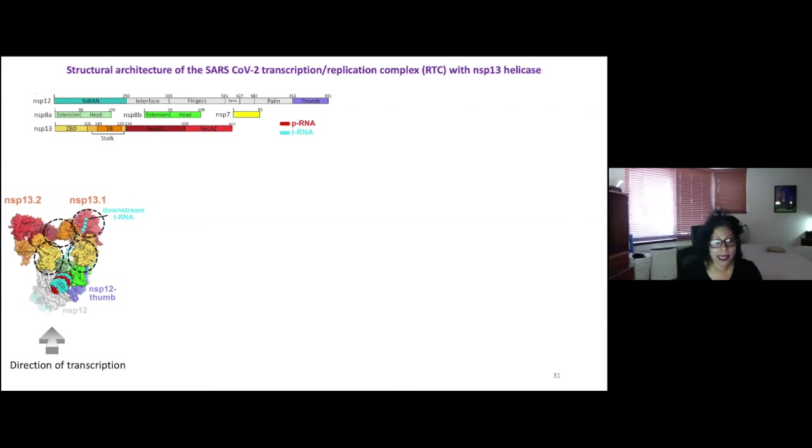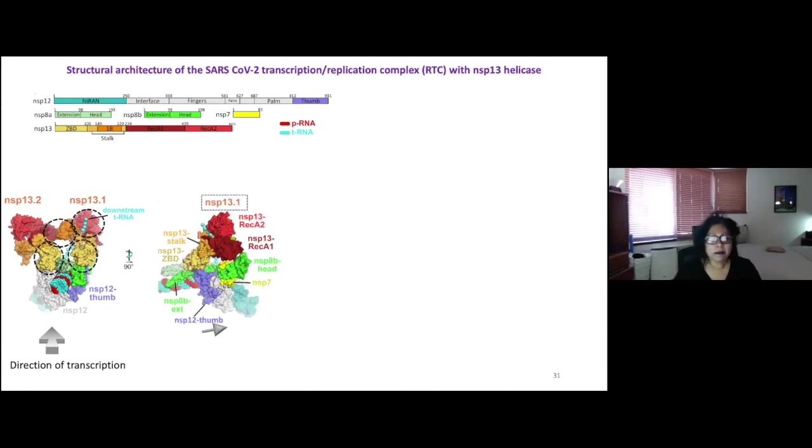And then lastly, as I mentioned, the five prime end of the template strand actually thread through an NSP13. We just made the scaffold. There was no rationale for us really doing that other than to put extra nucleic acids in case the helicase needed something and it worked.